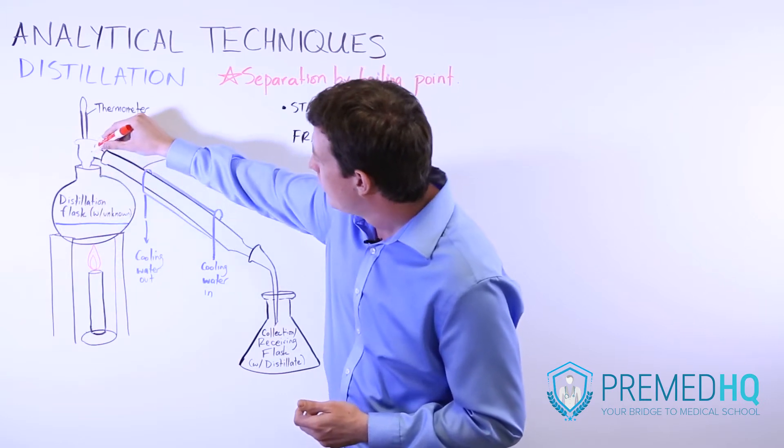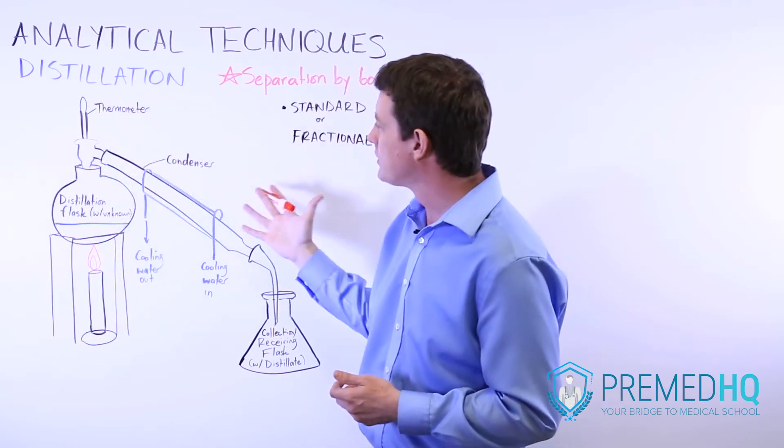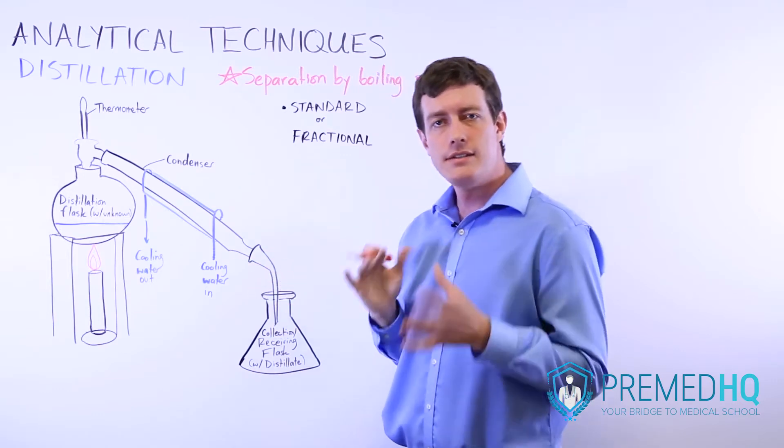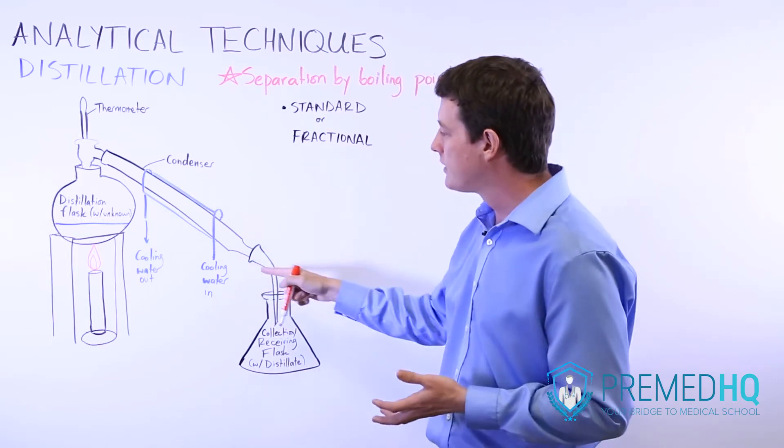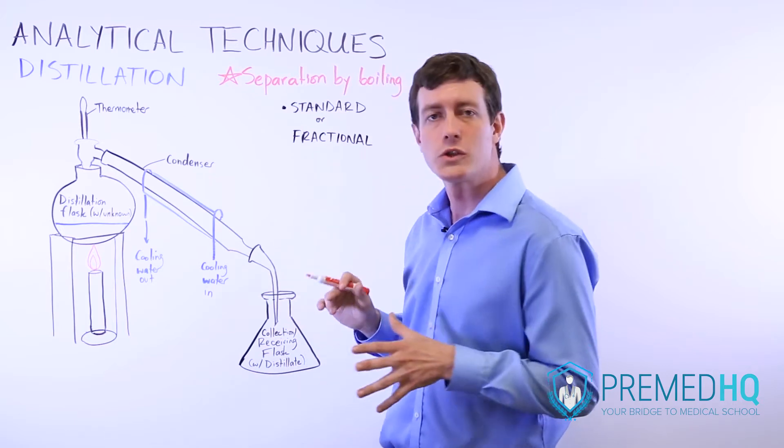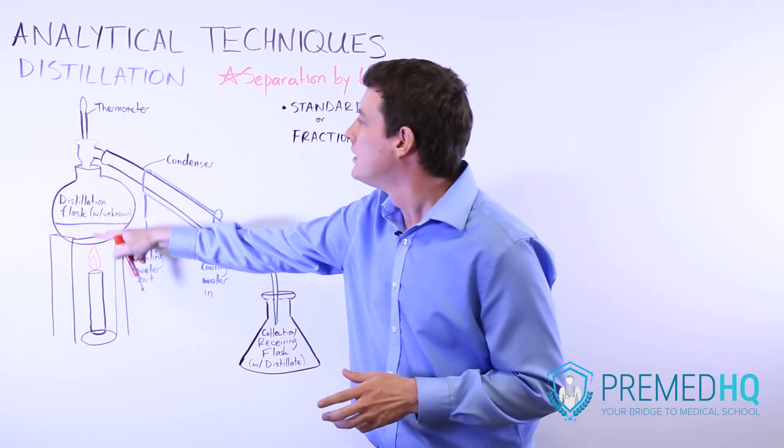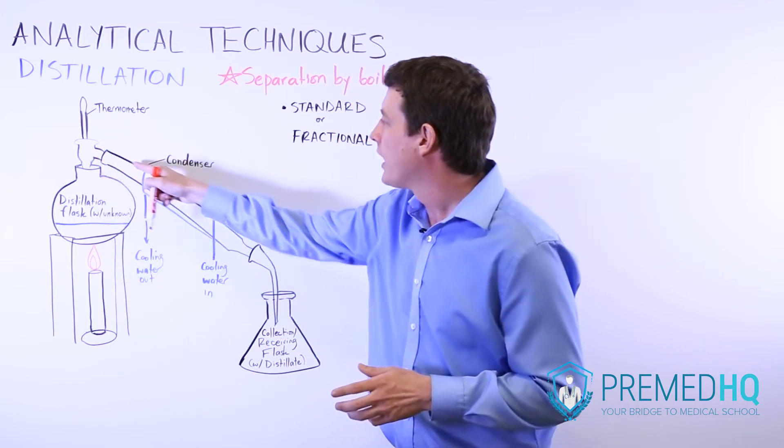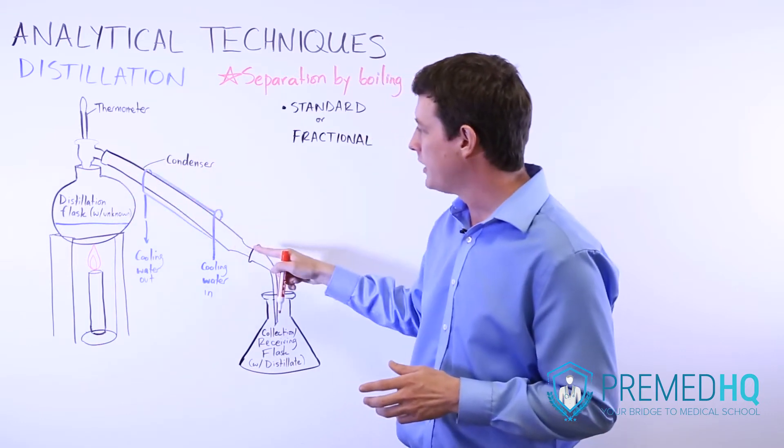They'll rise up and then move into what's called a condenser. The condenser usually has some sort of cooling water to make it colder and thus promote the gas phase turning back into the liquid phase and moving down here.